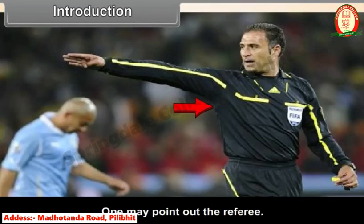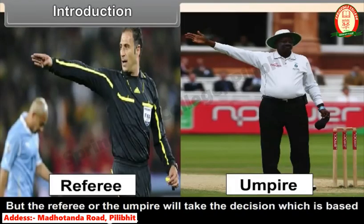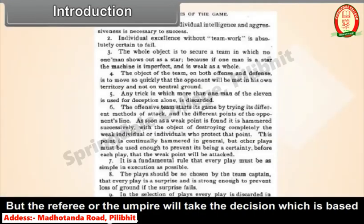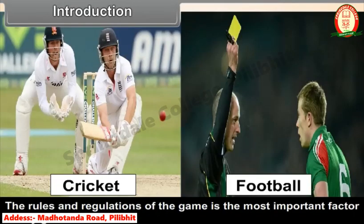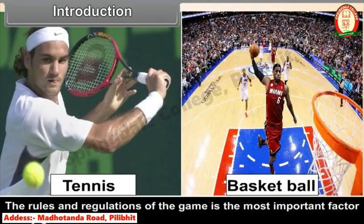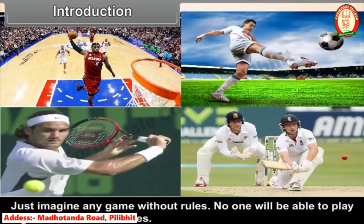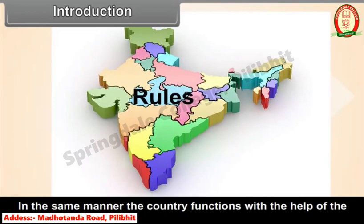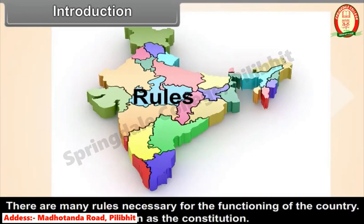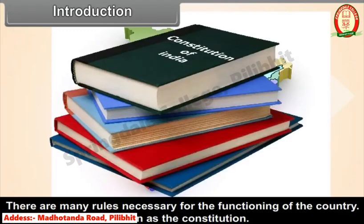Is it the player, the referee, or the spectators who has the final authority? One may point out the referee. But the referee takes decisions based on the rules of the game — the referee cannot decide without referring to the rules. The rules and regulations of the game are the most important factor. Just as no one can play a game without rules, the country functions with the help of rules. This set of rules is known as the Constitution.